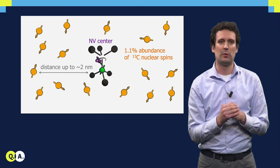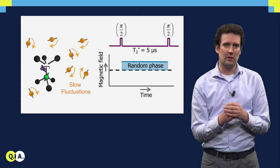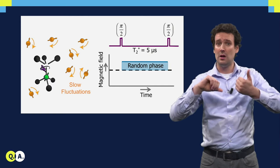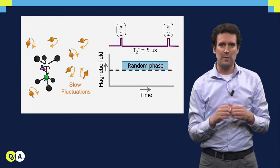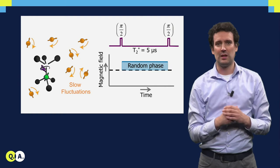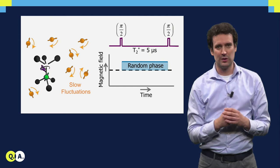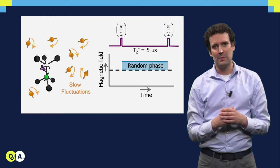Normally speaking, these nuclear spins are a source of decoherence. They flip-flop around randomly and create a slowly varying magnetic field on the NV center. So if we prepare the NV center in a quantum superposition state, then this fluctuating magnetic field changes the NV energy levels, and that causes this phase evolution to become random so that the quantum state is lost. This dephasing time is only about 5 microseconds — it is not that long.